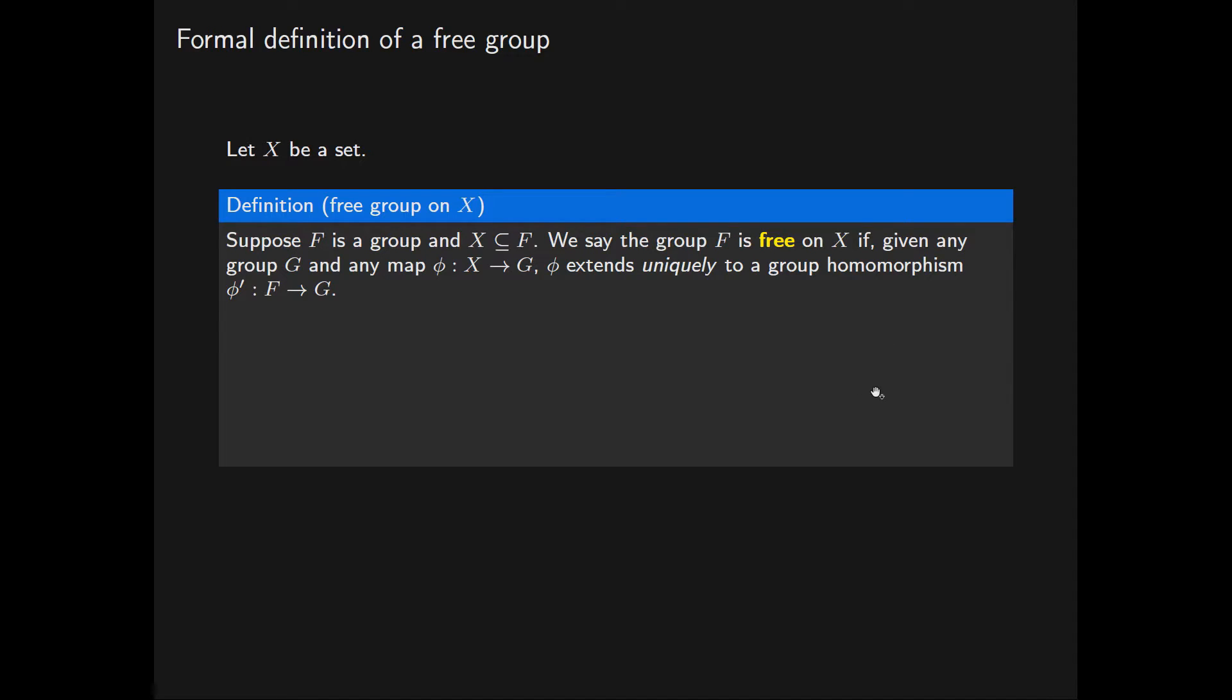And this is illustrated in the following commutative diagram. We have the map phi from the set X into the group G. We have the inclusion map from the subset X of F into F. This just maps every element of the set X to itself in F.